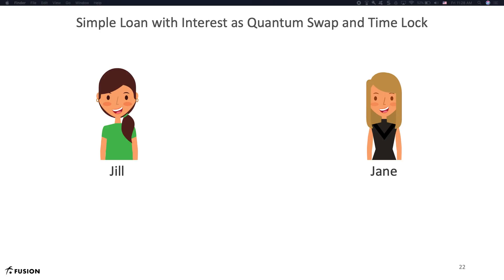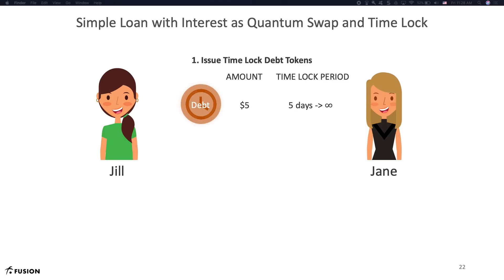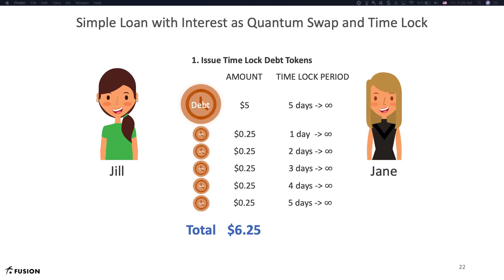Now let's move to the second example where Jill is charged interest of 25 cents per day. The concepts we apply here will be the same as the example without interest — we just have to account for each of the interest payments as combinations of quantum swaps and time locks for the respective periods, in addition to the original amount borrowed. We start by creating time-locked debt tokens: five dollars of time-locked debt token from five days to infinity, representing the original five dollars lent. We also create 25 cents of time-locked debt token from day one to forever, representing the first day's interest. Likewise, for each day's interest payment of 25 cents, we create a time-locked debt token for that day and amount, resulting in a total of six dollars and twenty-five cents of time-locked debt tokens.